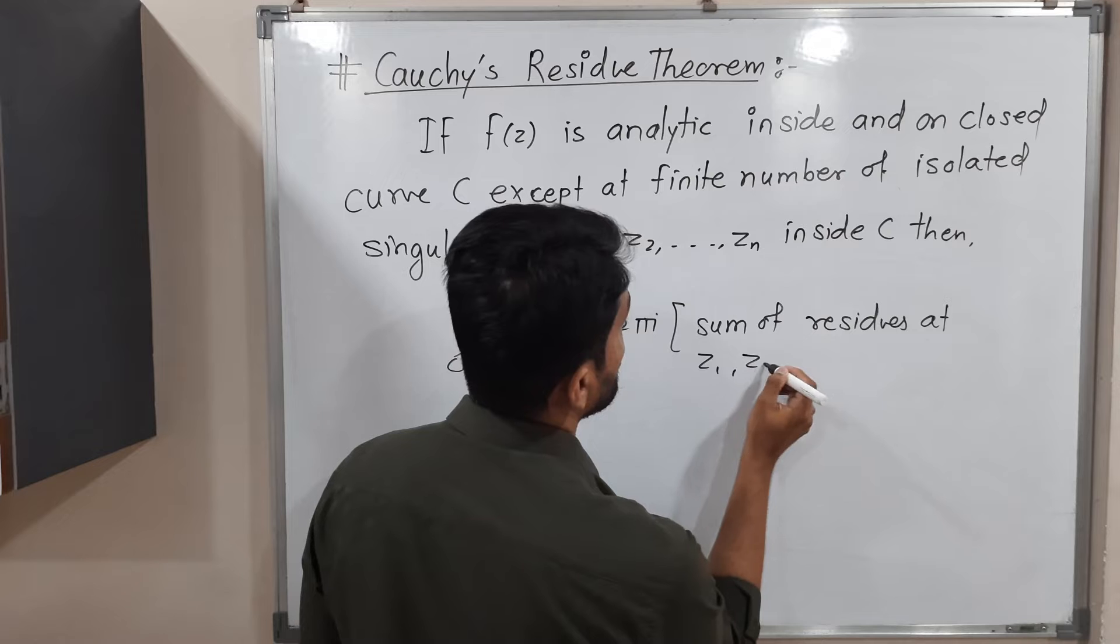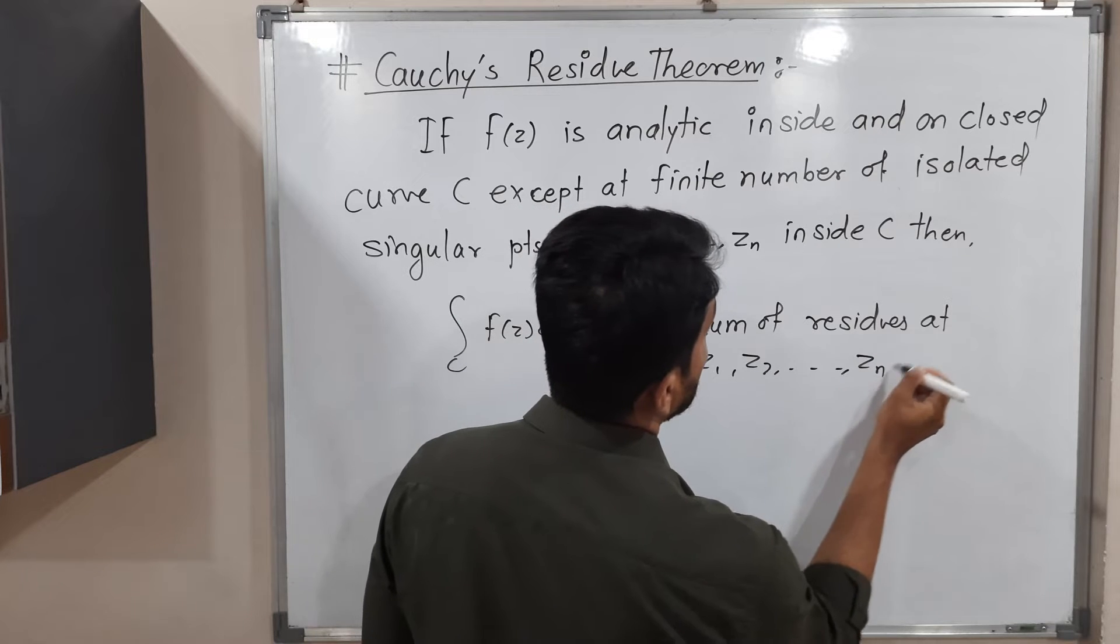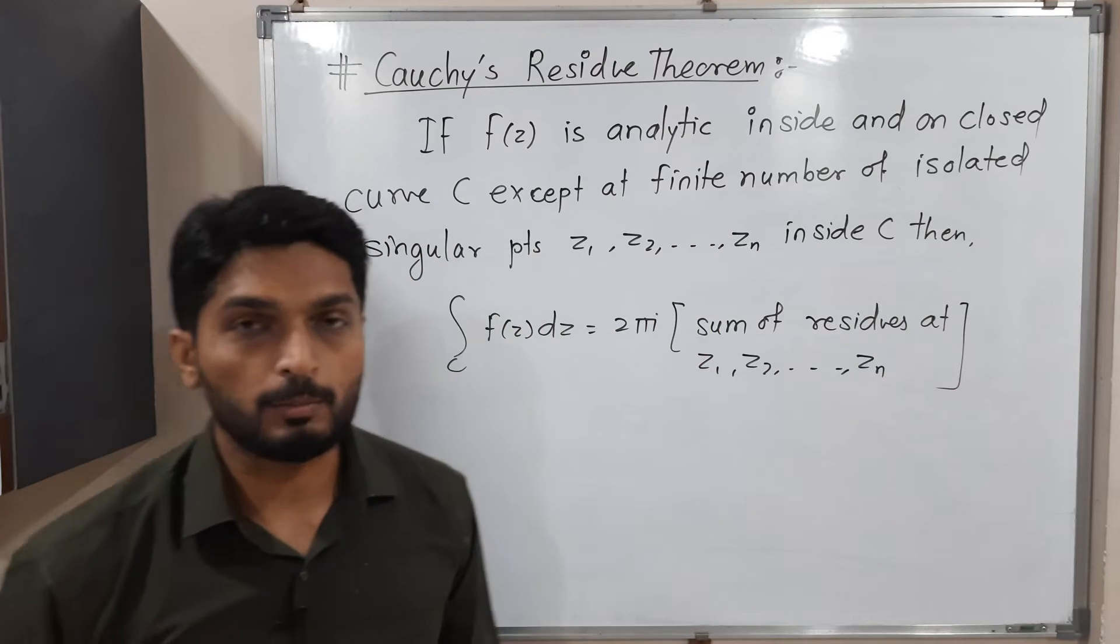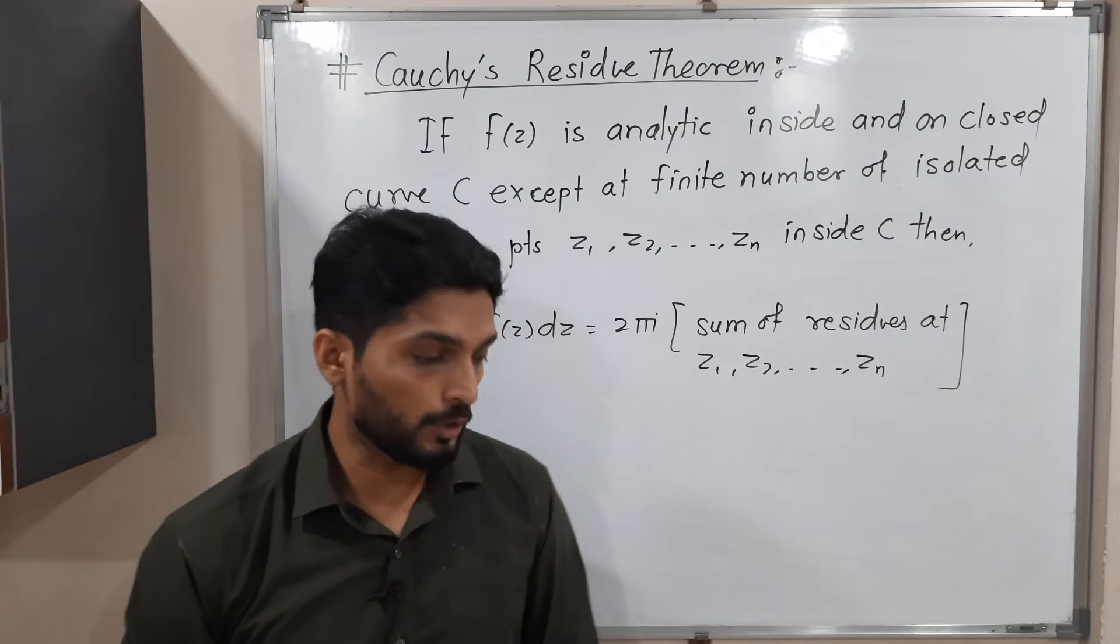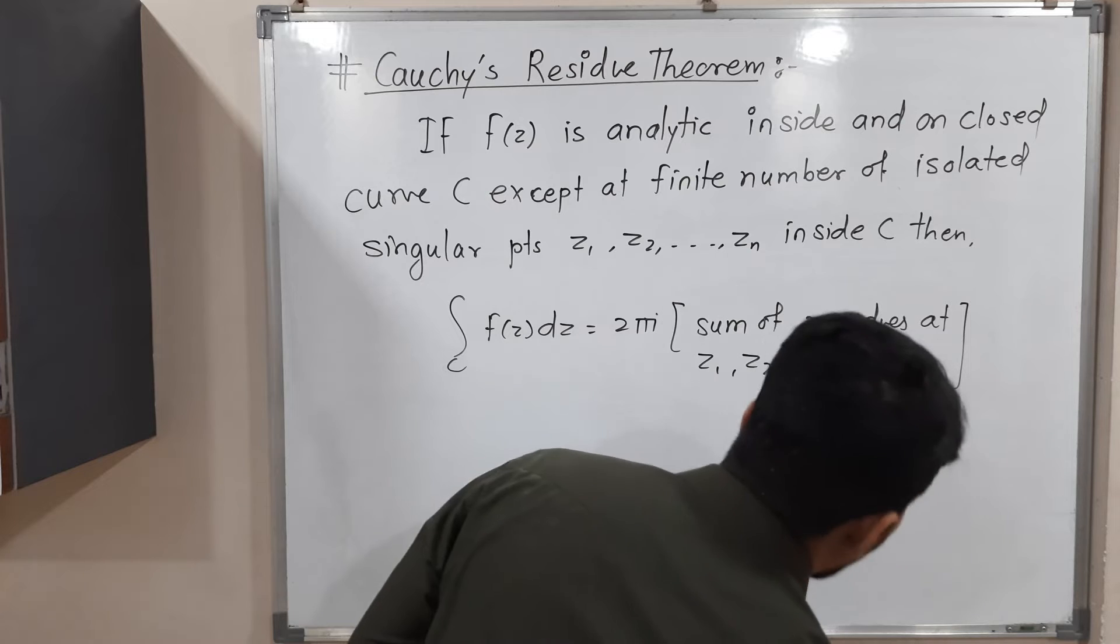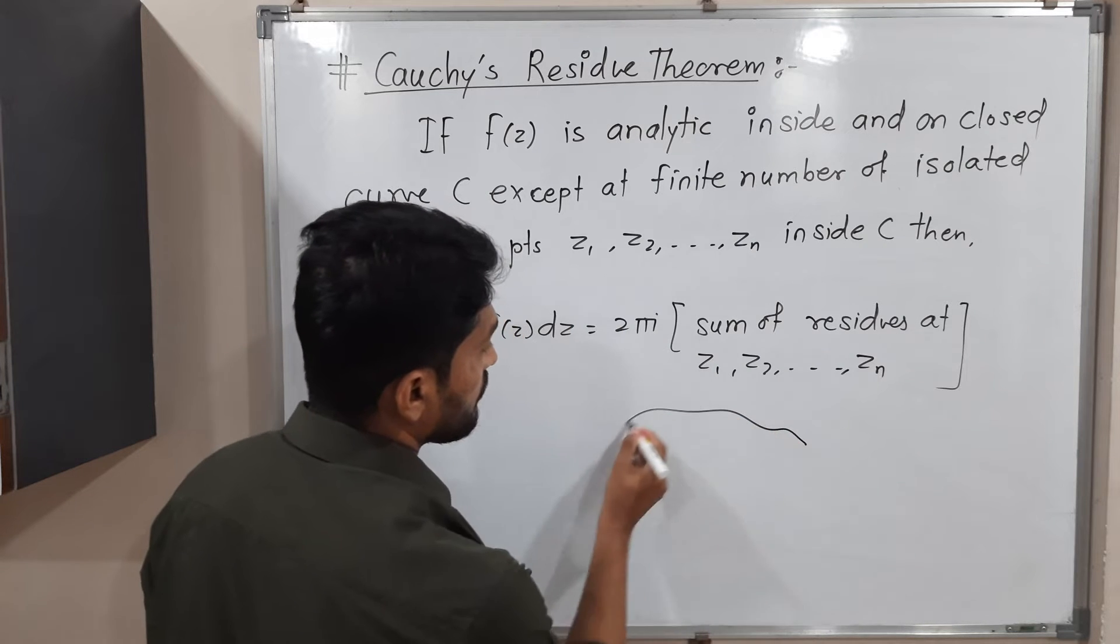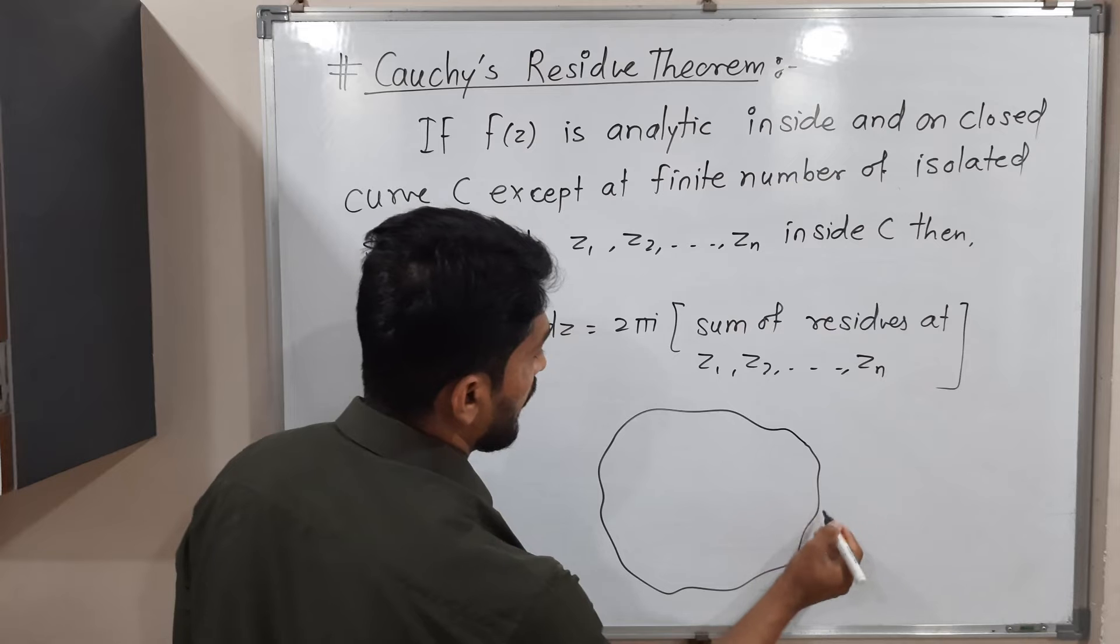okay, so this is the statement of Cauchy's Residue Theorem. Let us try to understand the meaning of it with the help of a diagram. So suppose we have a closed curve C, such type of closed curve we have.